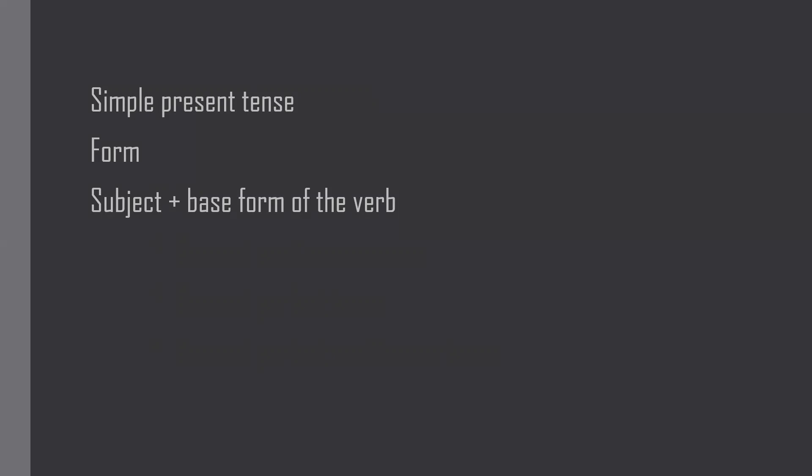What is the base form of the verb? For example: talk, walk, sleep, run, read, drink, eat, jump — all these are base forms. Other forms include -ing forms like working, sleeping, eating; -ed forms like walked, played, listened; and -en forms. If none of those endings are present, that type of verb is the base form. So the format of simple present tense is: Subject + base form of the verb.